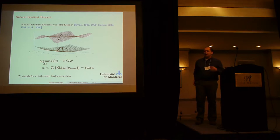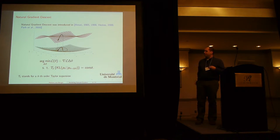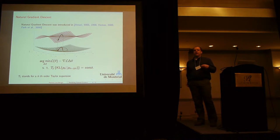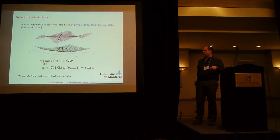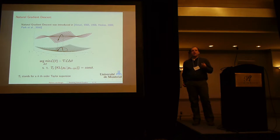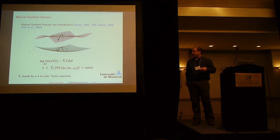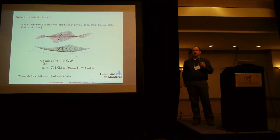You can think of natural gradient as a form of trust region method, where at each step you solve a constrained optimization: you minimize the first-order Taylor expansion of your loss L under some constraint. The constraint is on the KL divergence between the probability density functions that represent your model — basically you're saying you want the change in your KL to be constant once you take a step.